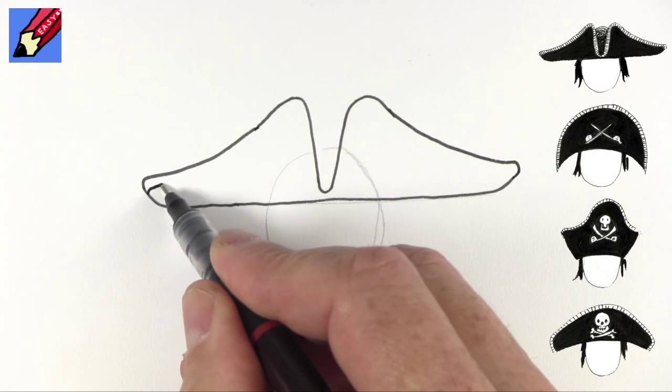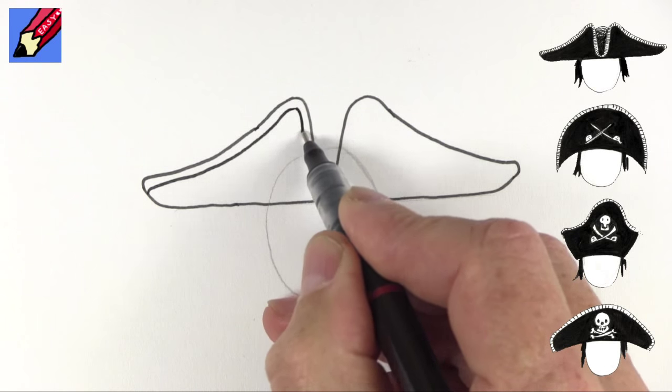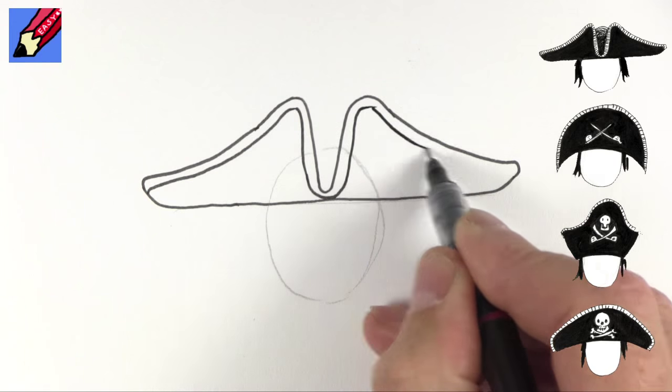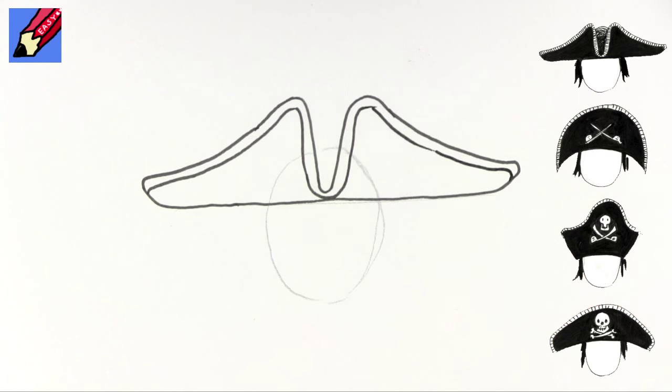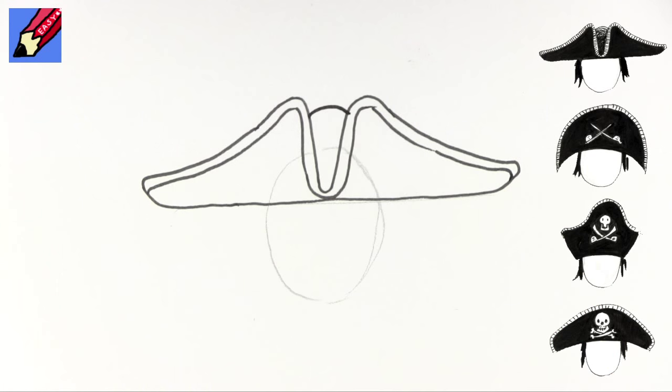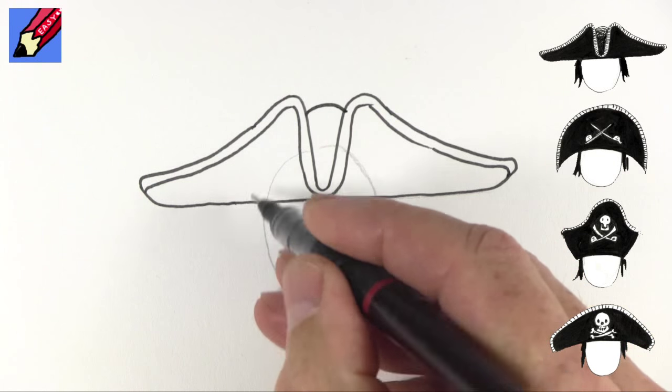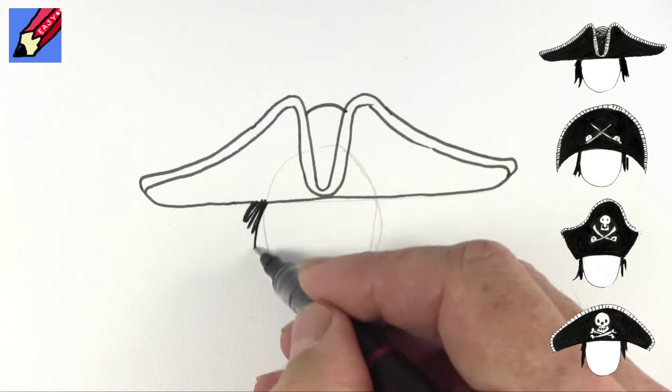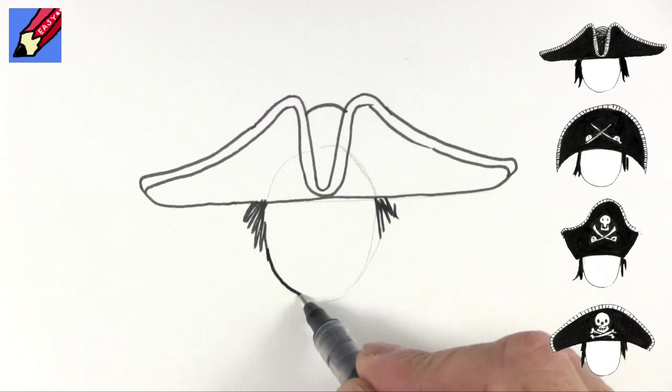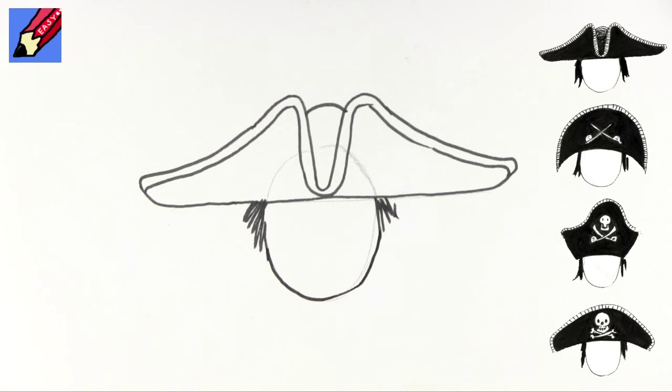Now here you're going to want this kind of braid edging. It's going to go all the way around like that and then this will be the dome of the hat inside. I'm just going to put a hint of the pirate face inside like that.